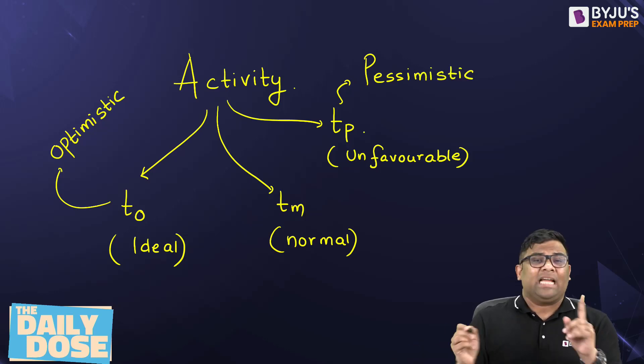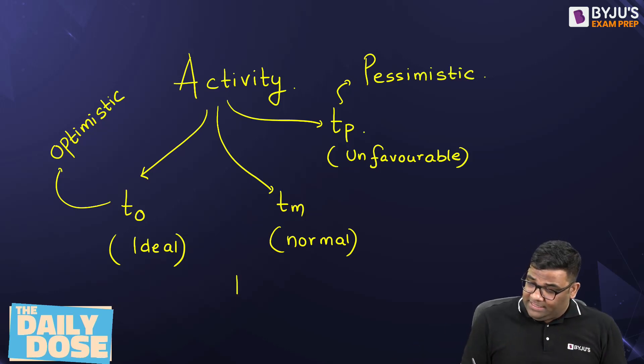Now, pessimistic time will be more than your most likely, which is under normal conditions. And that will be more than your optimistic. So Tp is greater than Tm, which is greater than T0.